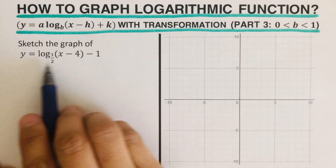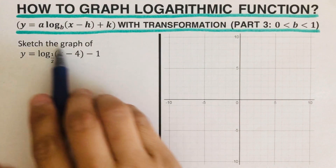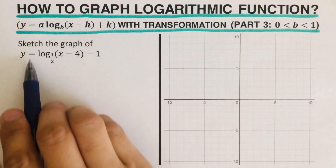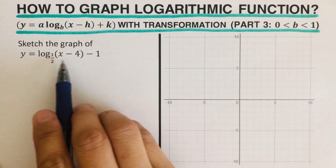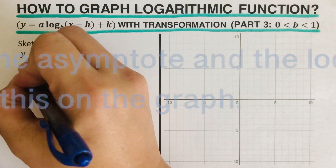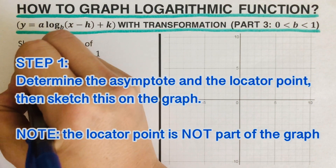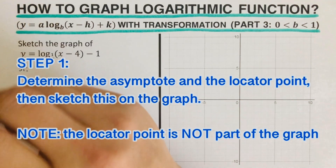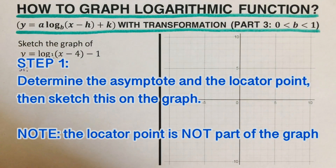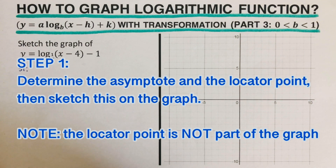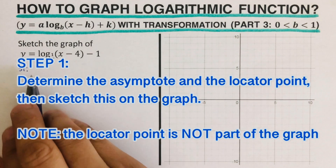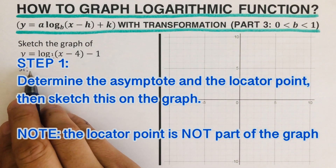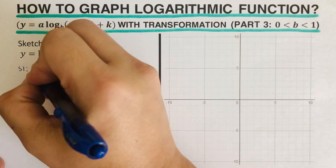So we go over this problem. We're supposed to graph this equation. The first step is to determine the asymptote and the locator point and sketch them on the graph. Remember that the locator point is not part of the graph, so I'm just going to determine the asymptote and the locator point.